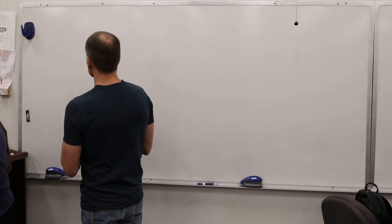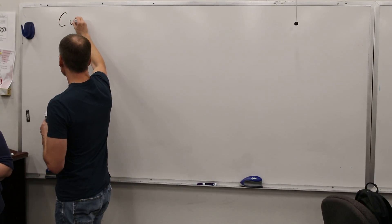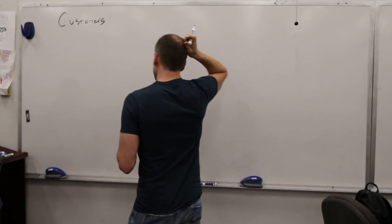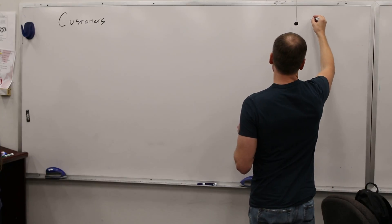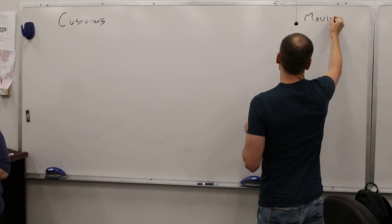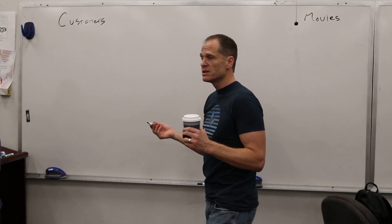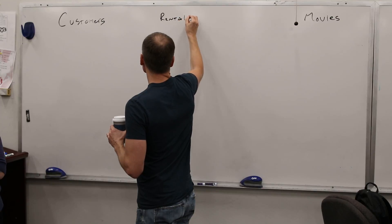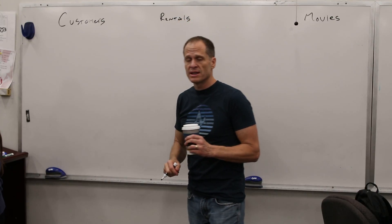The things that we need to keep track of — one of the things is, who are our customers? And so we start thinking about our data and grouping it together. So here we have customers, and then we're also going to have movies, and then we'll have rentals. These would be three categories for grouping our data together.